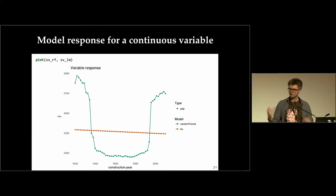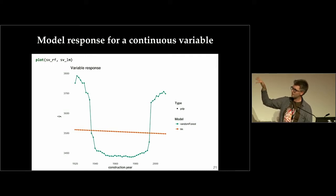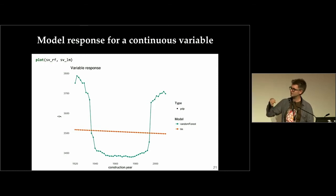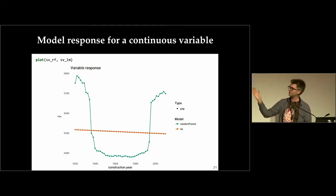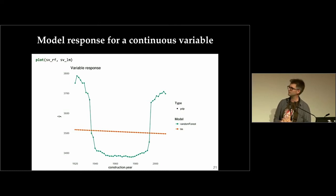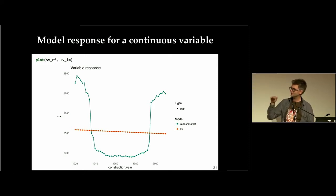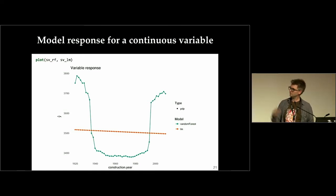What is really nice: you can take multiple models — two or three — and compare them. Here I have two models with equal performance, and I can see how the average response looks for construction year. There are two very different behaviors: random forest is elastic and found a non-linear U-shaped relation. This makes sense because apartments built before World War II are nicely located and expensive; after the war, lower-quality buildings reduced prices; and recent apartments are relatively nicer and more expensive. Linear model is unable to capture this non-linear relation, so they differ.